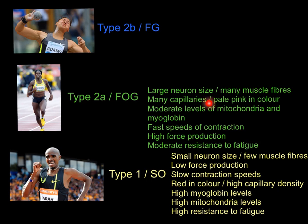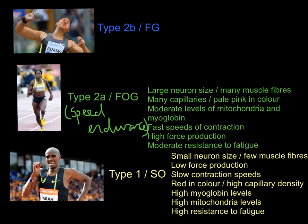FOG fibers have quite a few capillaries, though nowhere near as many as slow twitch fibers. They appear pale pink in color, showing the presence of capillaries delivering oxygen but not as much as slow twitch. There are also moderate levels of mitochondria and myoglobin, so there is still a slight aerobic element. These fibers have very fast speeds of contraction, high force production, and moderate resistance to fatigue — making them great for speed endurance events like the 400 and 800 meters.